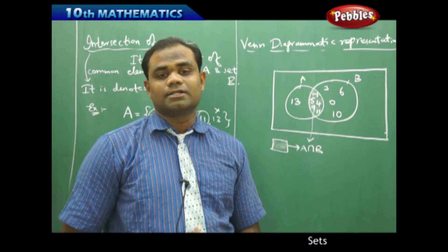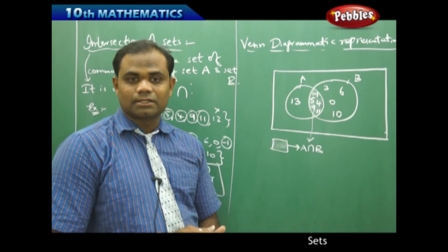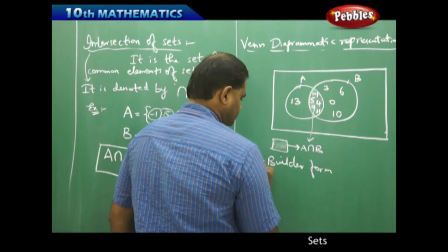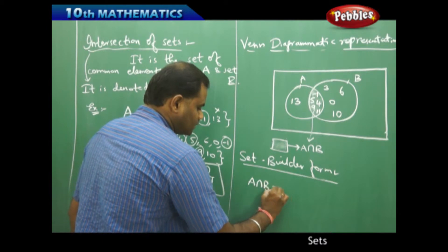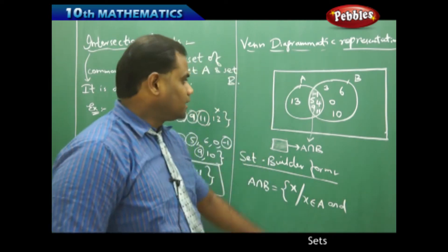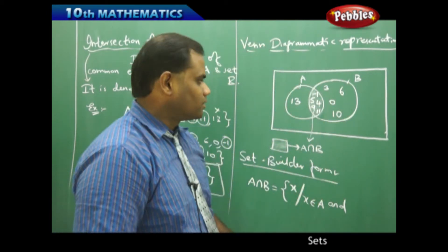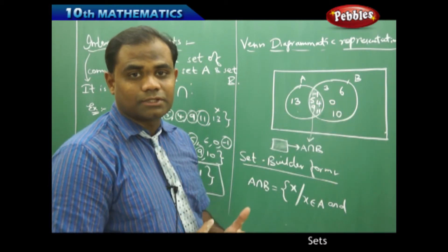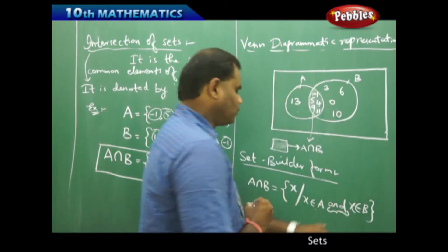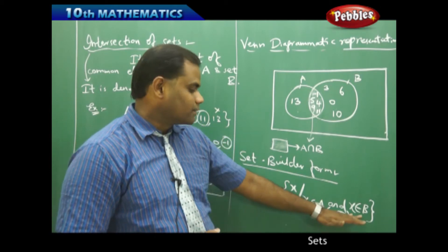Now let's see the set builder form for intersection of two sets. As we discussed with union — which was represented with 'or' — intersection is represented with 'and'. The set builder form of intersection is: A ∩ B = {x | x ∈ A and x ∈ B}, because the element in the intersection must lie in both A and B. So the key learning outcome is: union uses 'or', intersection uses 'and'.